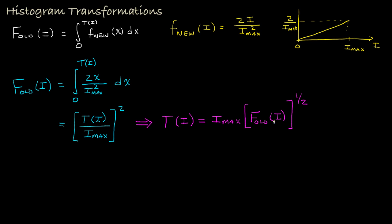There are a couple of examples. For more complicated cases, we just go back to the original equation, put in the functional form for the desired frequency histogram, and determine what the form for the transformation would be.